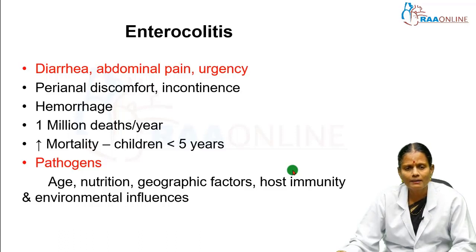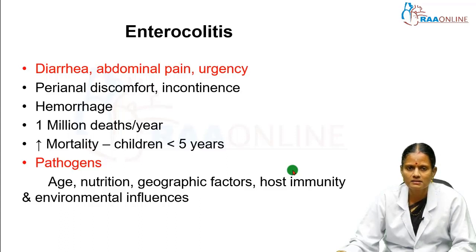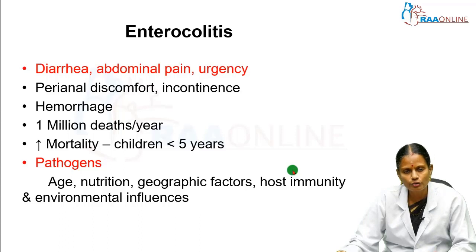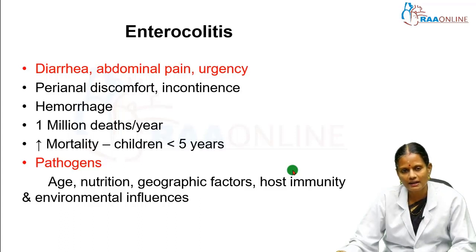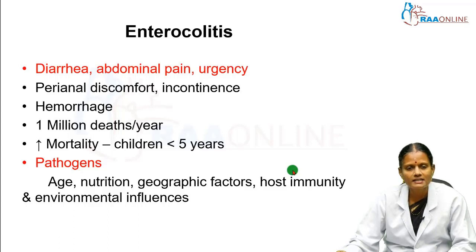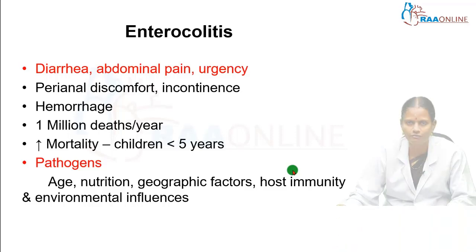Infectious enterocolitis constitutes 1 million deaths per year and mortality is increased in children less than 5 years. There are a host of pathogens that cause it, and the disease depends on the age, nutritional status, geographic location, immunity, and environmental influences. So no single bacillus or parasite is specific to enterocolitis — it depends on various factors.